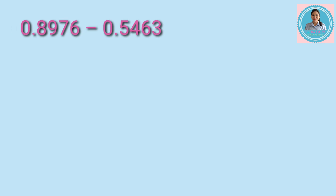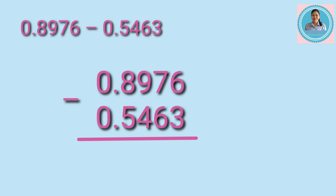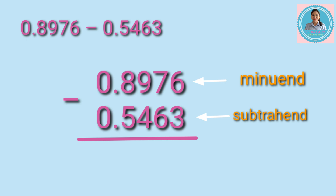Number five: regroup if necessary. Number six: put the decimal point in the difference just below the decimal point of the minuend and subtrahend. Now let's arrange the numbers in columns. The minuend is 8.9763 ten-thousandths and the subtrahend is 5.4631 ten-thousandths. We start subtracting from right to left: 6 minus 3 equals 3.